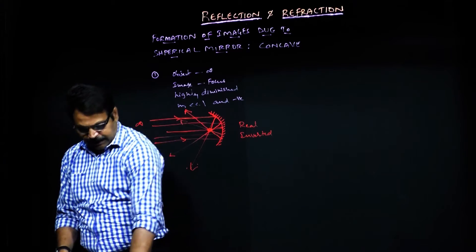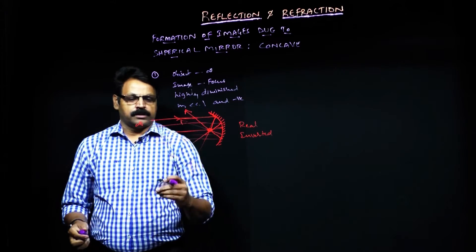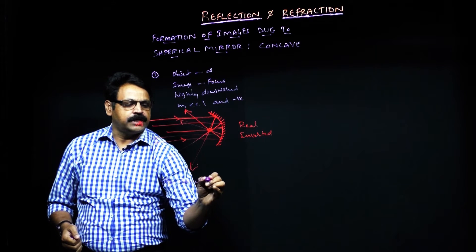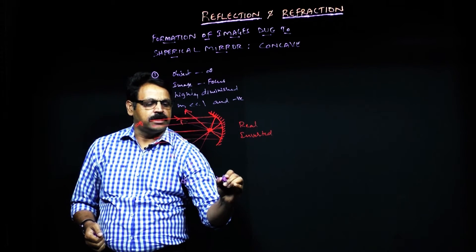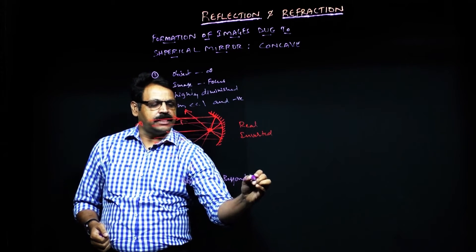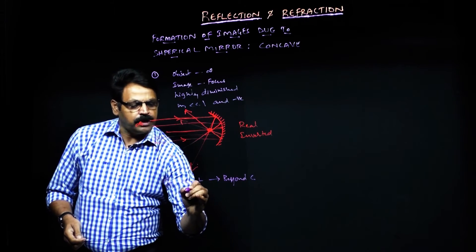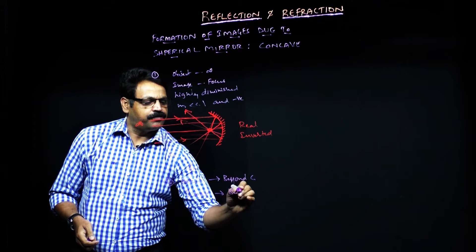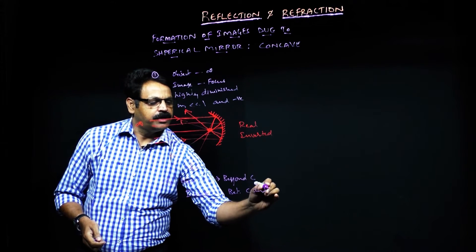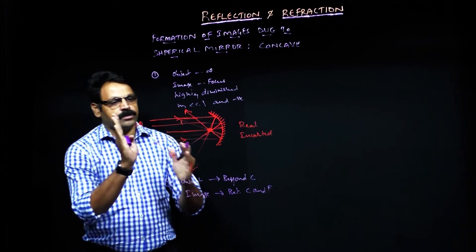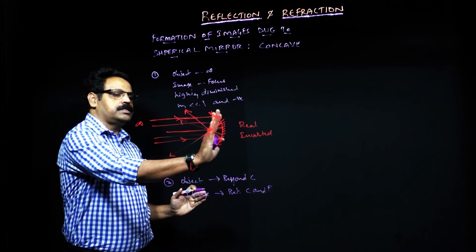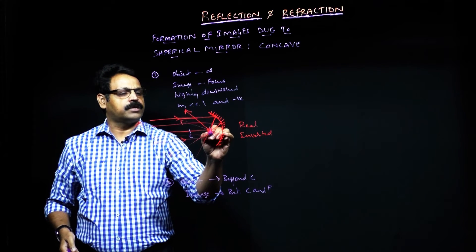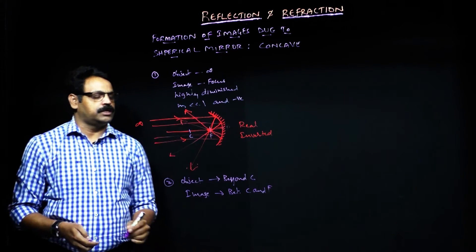Similarly, you can think of the second case as you move the object towards the center of curvature. The second case: object is beyond C — beyond the position of C. The image is formed between C and F, that is between the center of curvature and focus. As you move the object towards the surface, the image moves away. This is the center, this is the focus, and this is the pole. These are the points you need to remember.